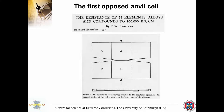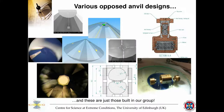The first opposed anvil cell, as classically considered, was by Percy Bridgman. This is a diagram from his paper published in 1951: 'The Resistance of 72 Elements, Alloys, and Compounds to 100,000 kg/cm².' He introduced the idea of the gasket supporting the anvils and also the composite anvil design.